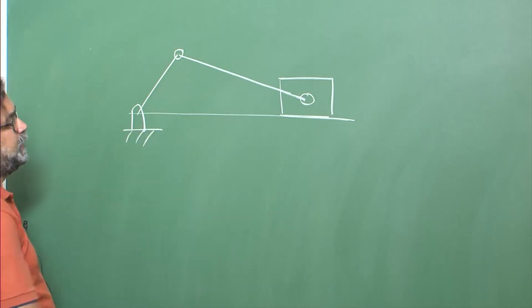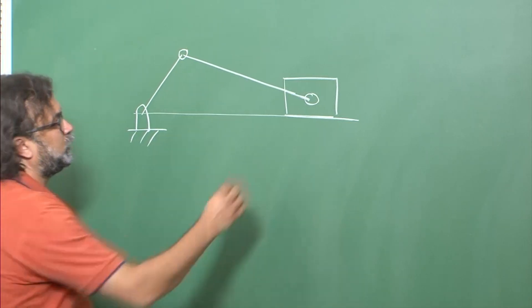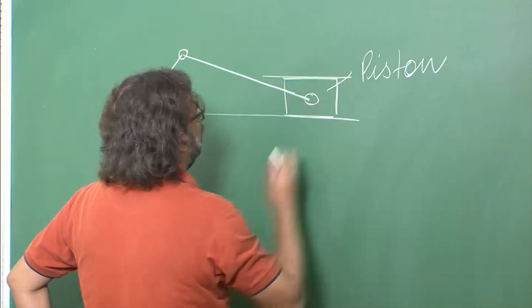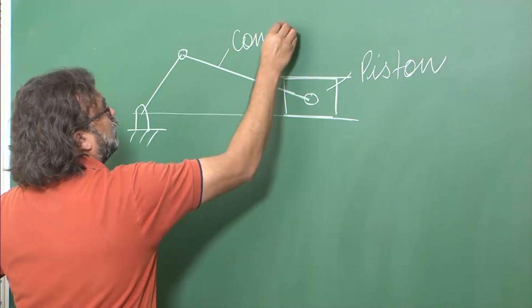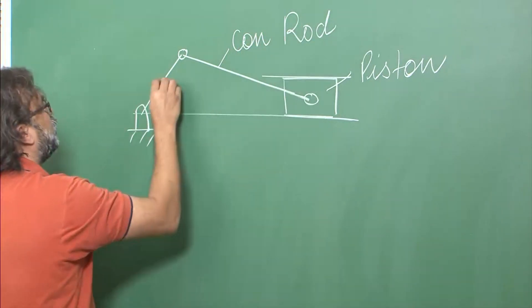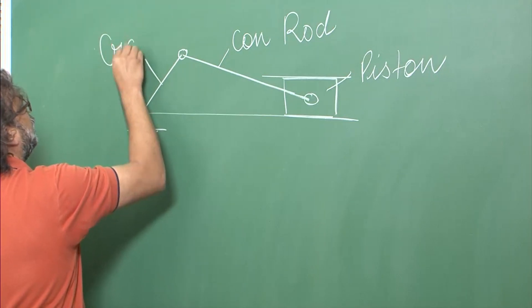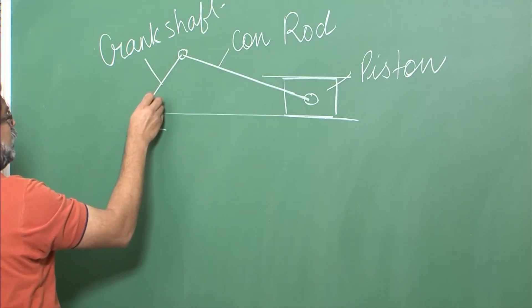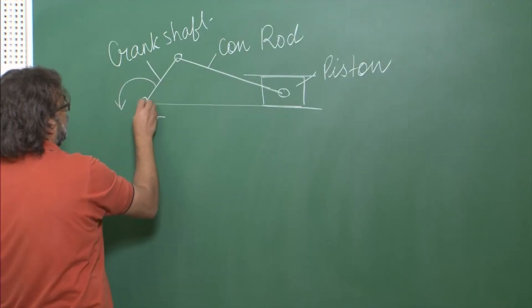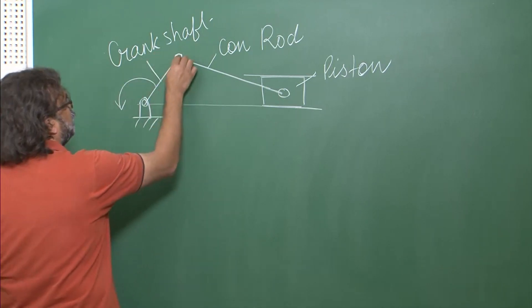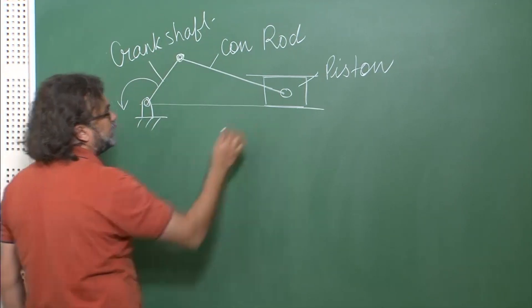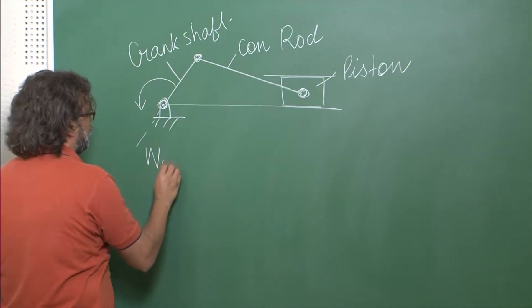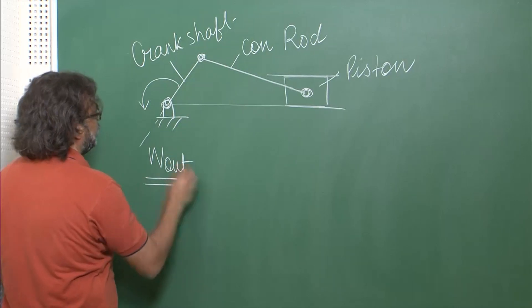Essentially we have seen this mechanism operating in the videos. This was our piston, this was our connecting rod, this was our crankshaft and this was essentially rotating. There was a bearing here - you have seen in the video there was a bearing here, there has to be a bearing here, there has to be a bearing here - and then you essentially get W out from this crankshaft.